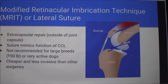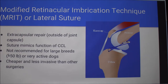With the MRIT, that blue line in the picture is the suture the doctor puts in. It's an extracapsular repair, meaning they do it outside of the joint, and it basically mimics the function of the CCL. It's not recommended for large or active dogs because it's just sutures holding it in place — a lot more risk to break if you have a large dog. But it is cheaper and less invasive than the other surgeries, so there are benefits to it.